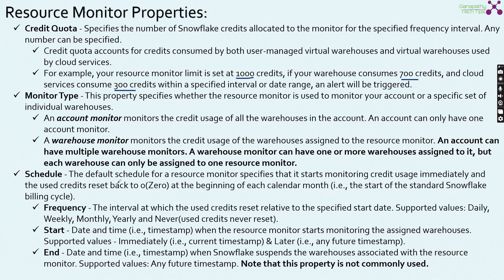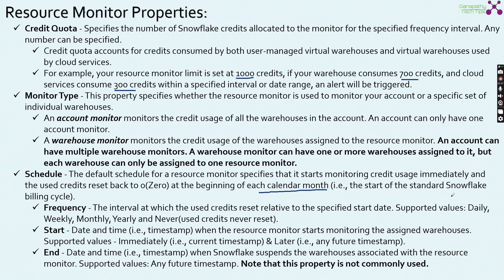The third property is the schedule. This defines on which frequency to check the specific Snowflake credit and quota usage. The default schedule for a resource monitor is that it starts monitoring credit usage immediately and credits reset back to zero at the beginning of each calendar month — that is the start of the standard Snowflake billing cycle. But we can change this frequency to any extent by changing the frequency parameter.